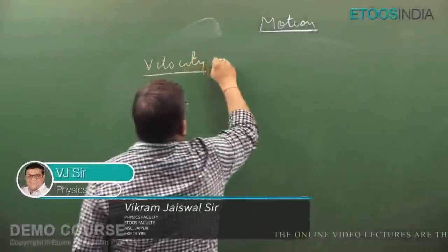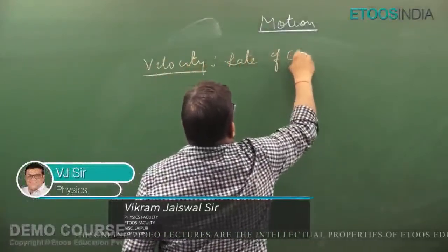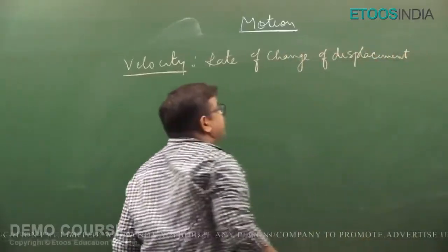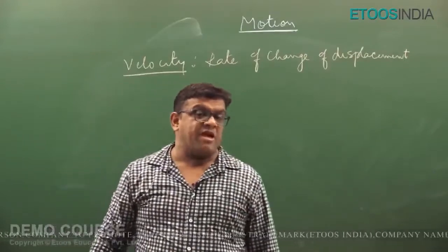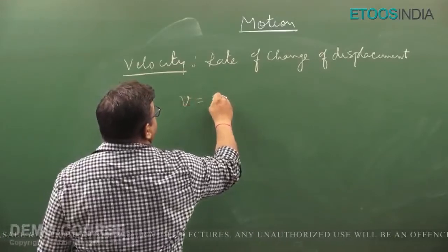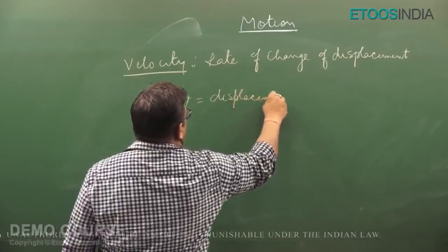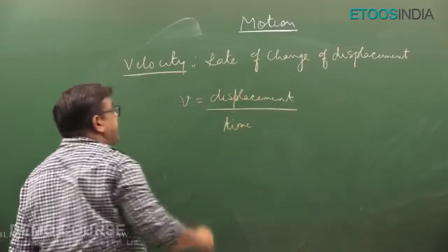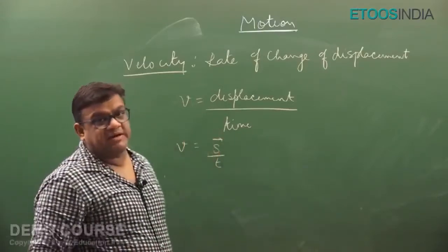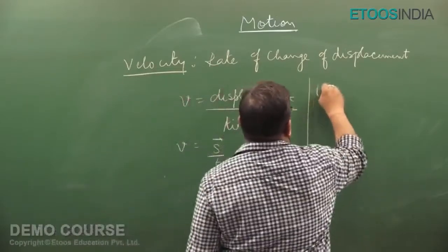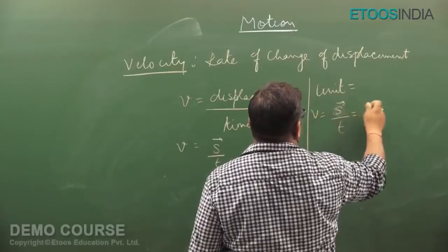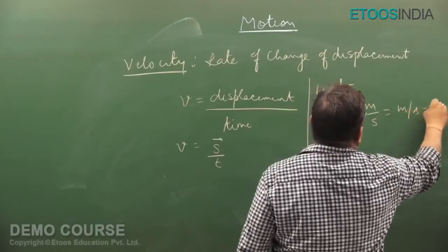Now, let us see what is velocity. It is defined as rate of change of displacement. What is rate of change of displacement? It will be displacement upon time. Or I can write S with a bar, which means displacement. The unit is meter per second, or ms⁻¹.